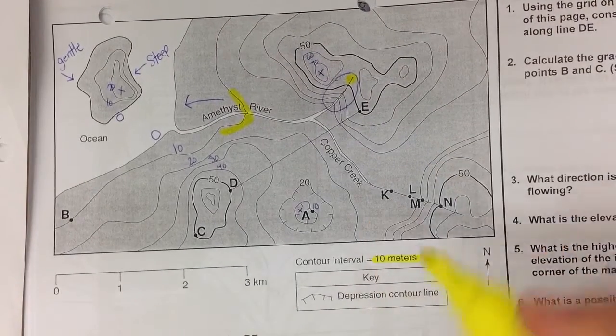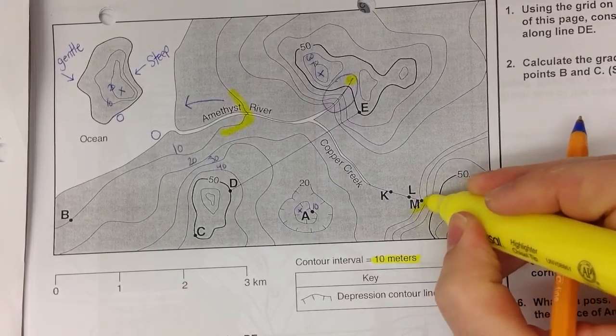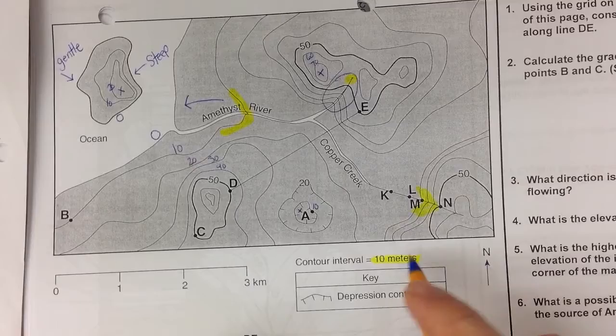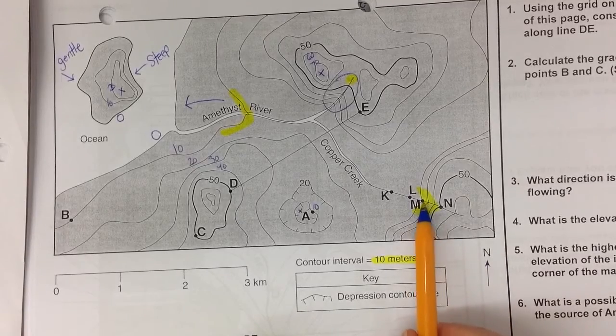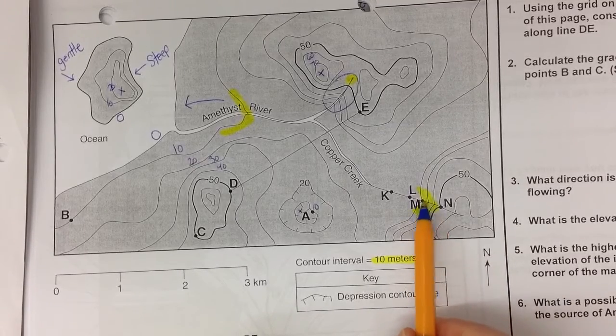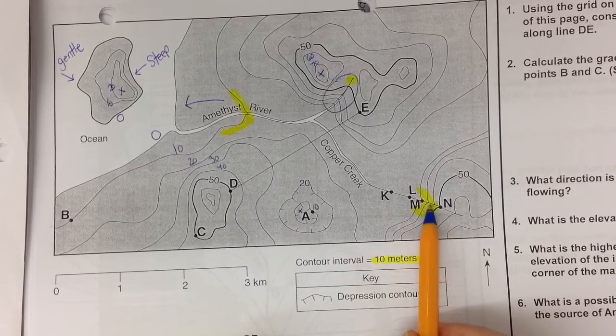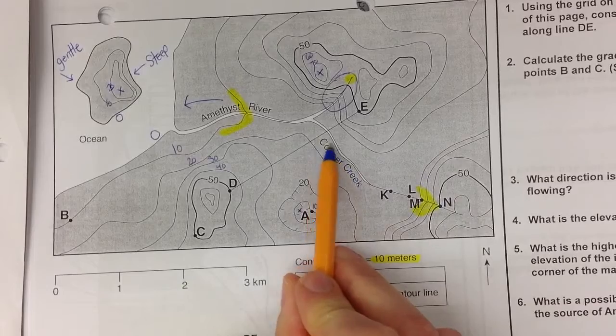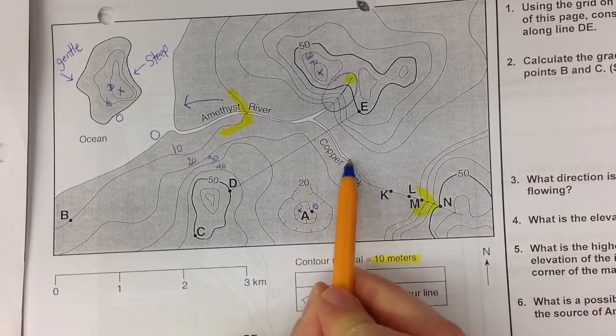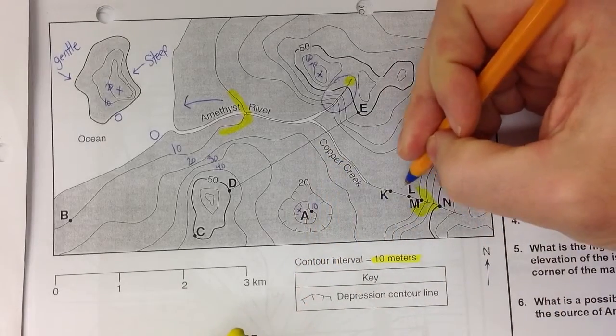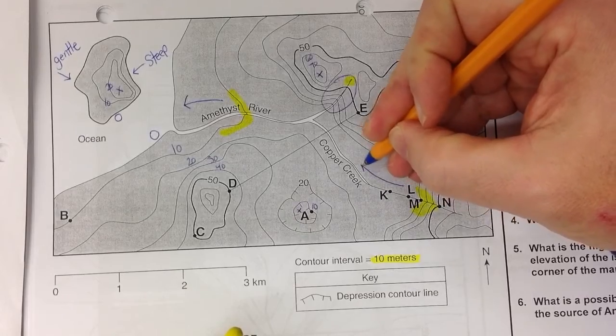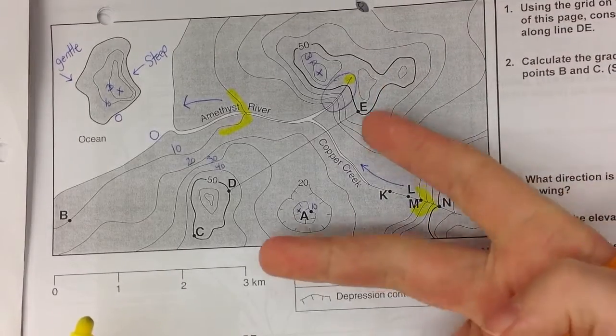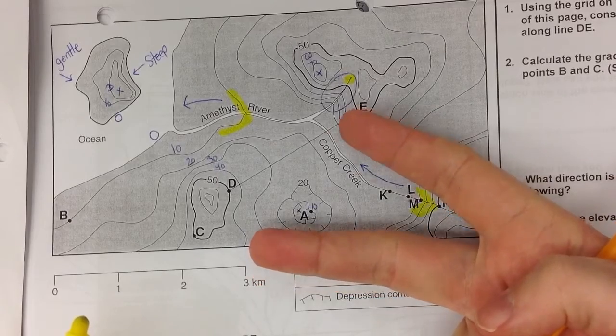Look at Copper Creek. Right here at Copper Creek, your contour lines make Vs. And also, they're really close together here. So again, between M and N, your river is flowing really fast because your lines are really close together. And then it really kind of flattens out here because your lines are really far apart and really slows down. But again, your river is flowing kind of in a west-northwest direction because the river is flowing out of the Vs.